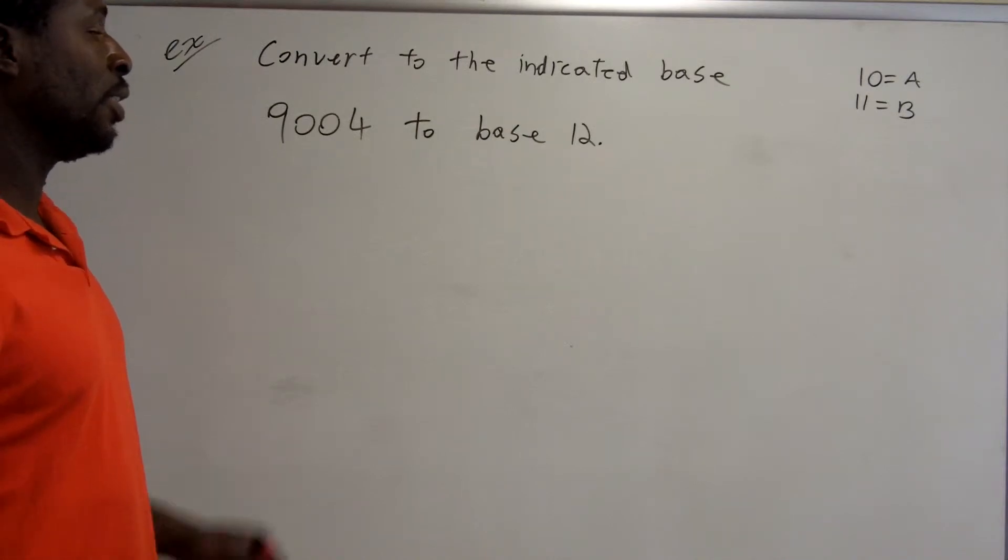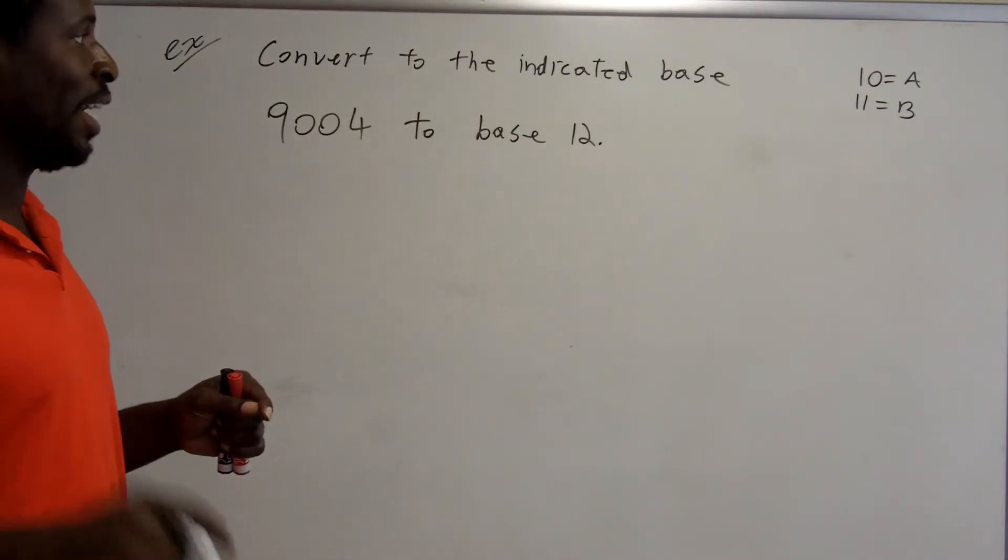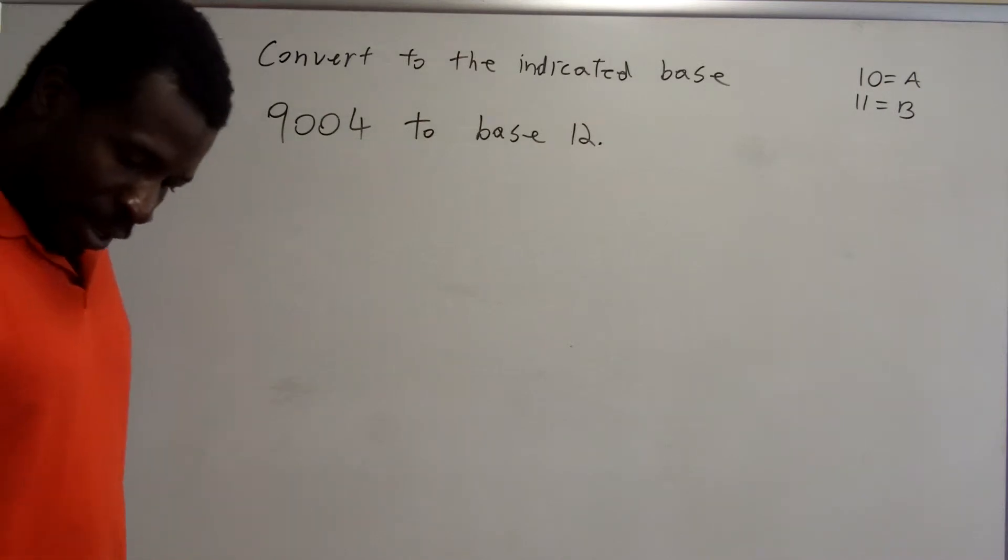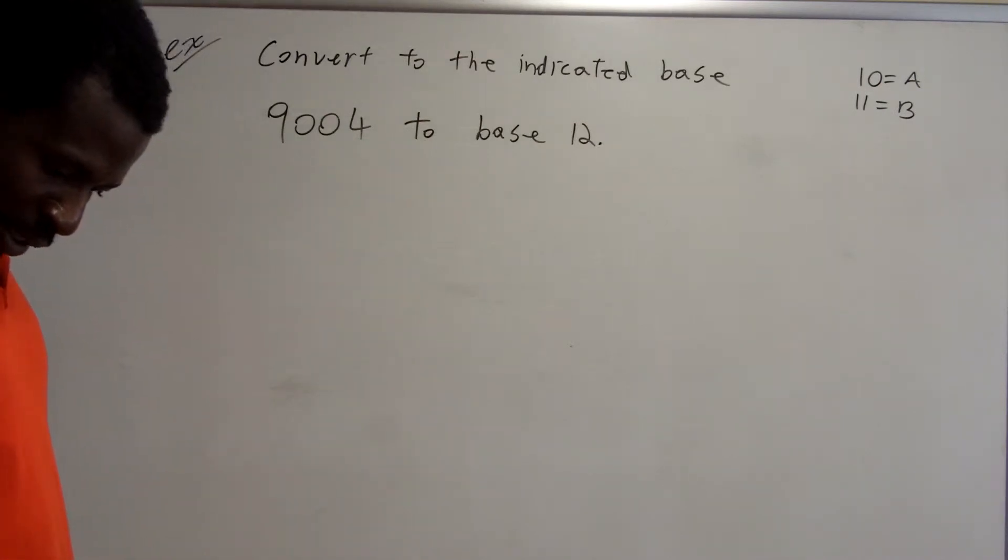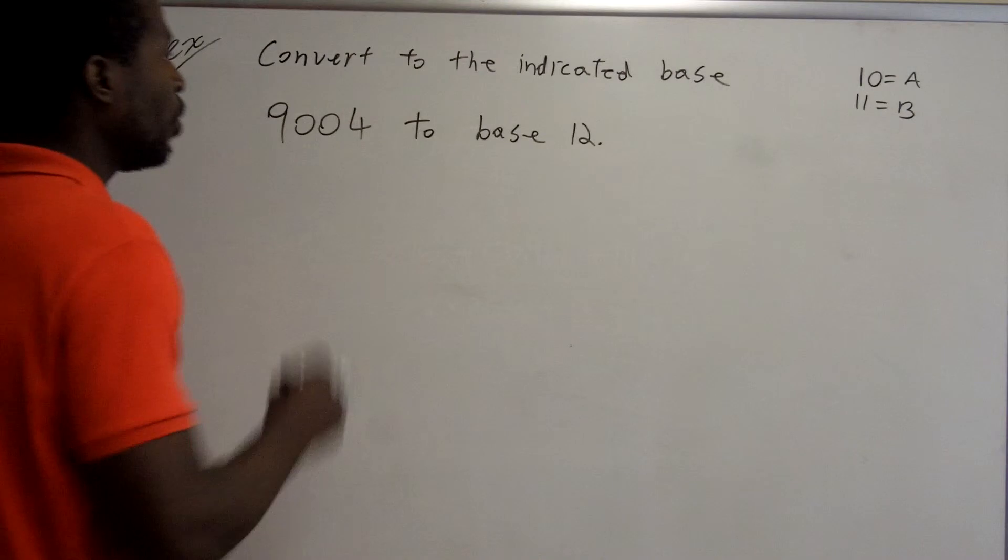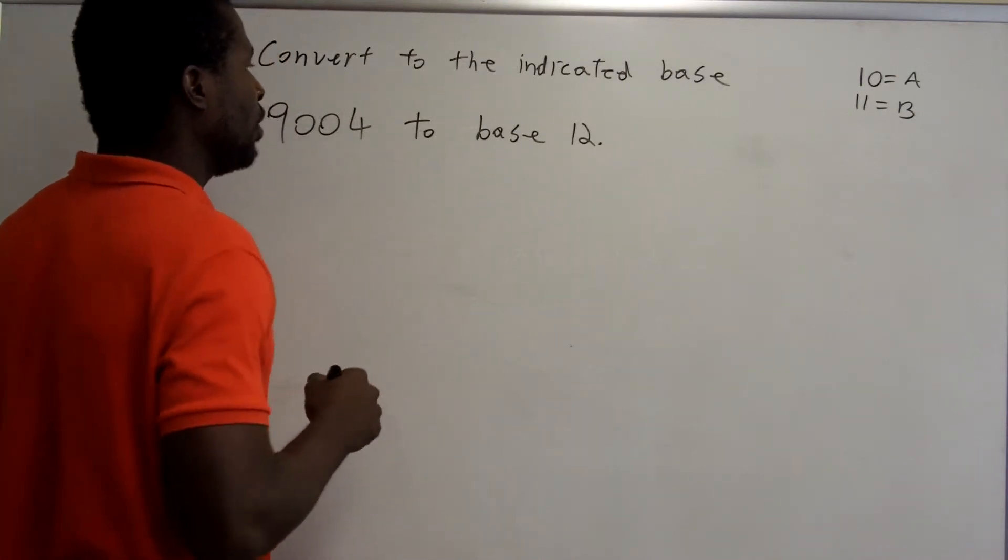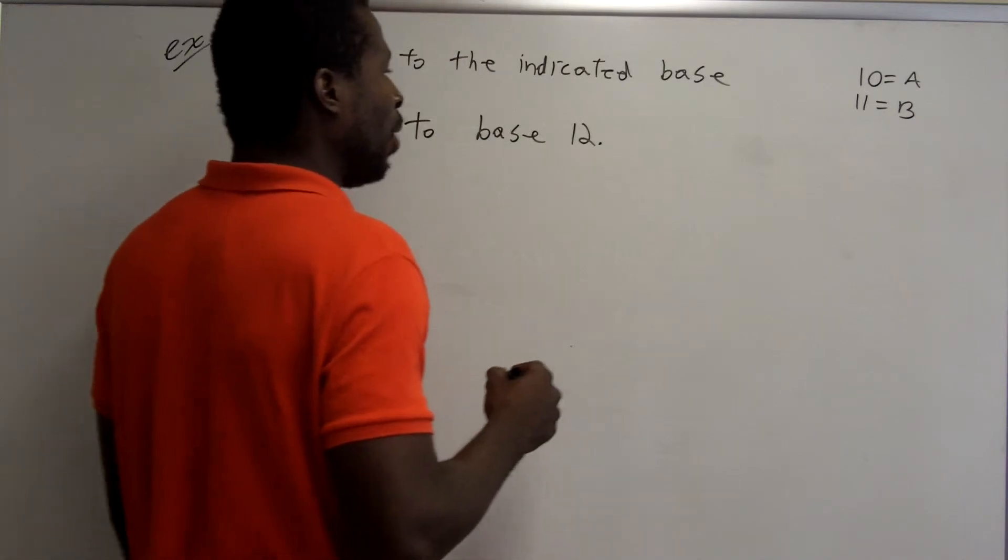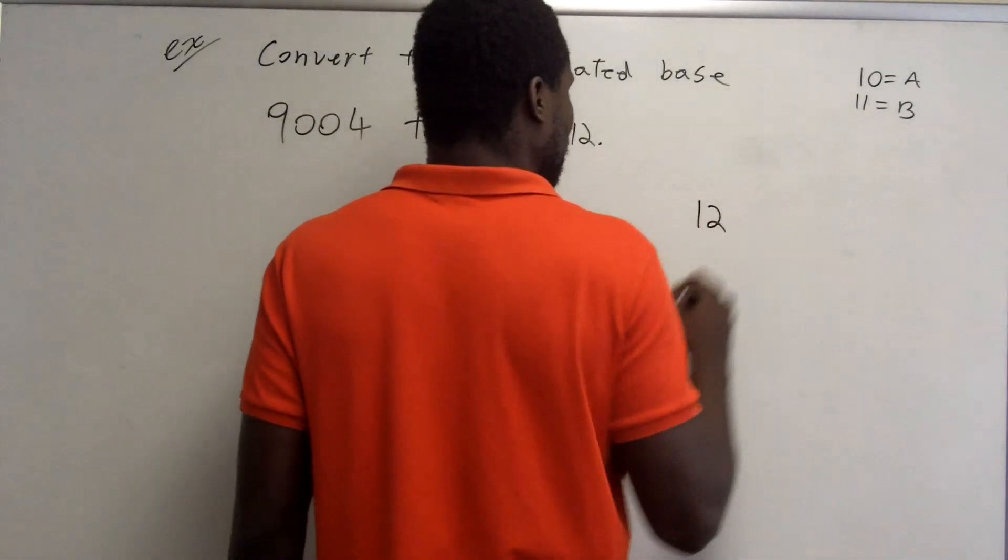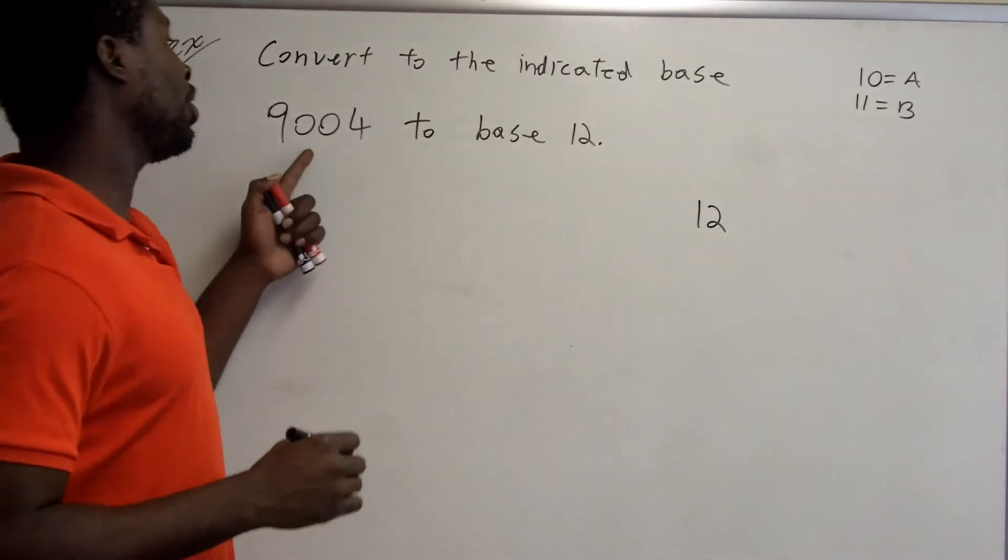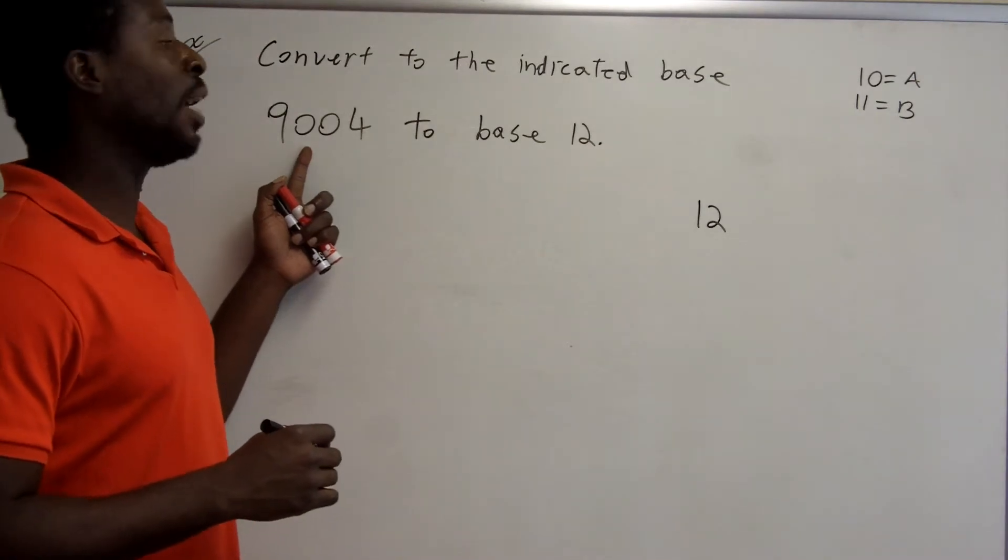So this is not base 16 anymore. It's base 12. So I only need numbers up to 11. So I need 0, 1, 2, 3, 4, 5, 6, 7, 8, 9. 10 is A and 11 is B. Okay, so now let's convert this to a numeral in base 12. Well, in order to do that, we need all the powers of 12. We need the largest power of 12 that's less than 9,004.